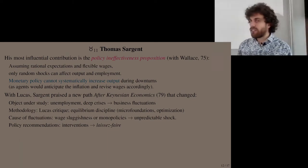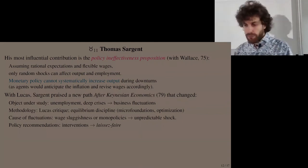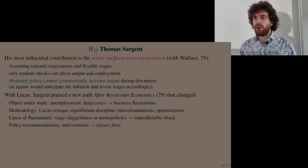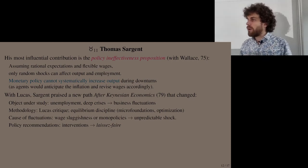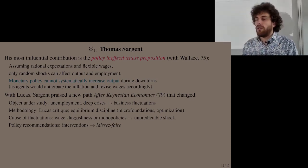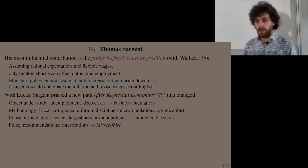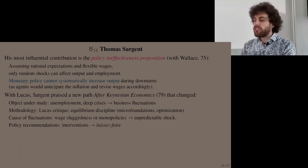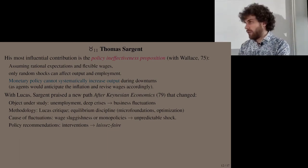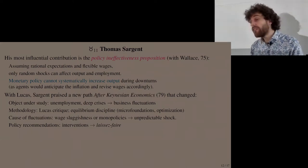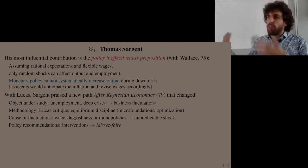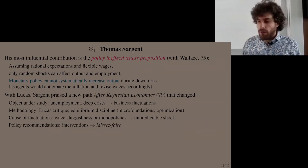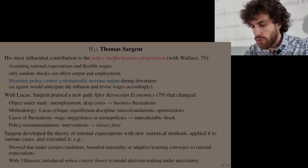The cause of fluctuations is radically different between the two schools. For Keynesians, it's sluggishness and rigidities in prices and wages, and imperfect competition and monopolies, which create deviations from the optimal equilibrium of full employment and an efficient economy. For Lucas and Sargent, the cause of business fluctuations are unpredictable shocks that are not explained within the models. Policy recommendations are opposites: for Keynesians, government needs to intervene; for New Classicals, not — they promote laissez-faire, no state policy.